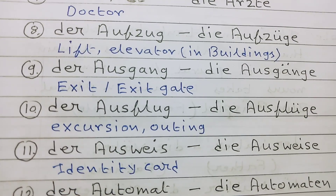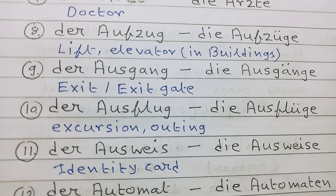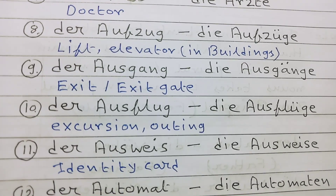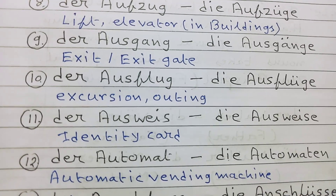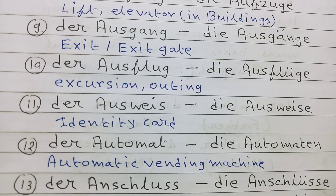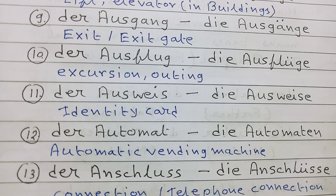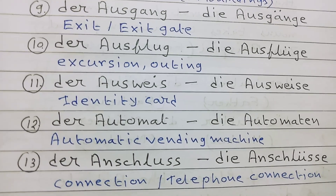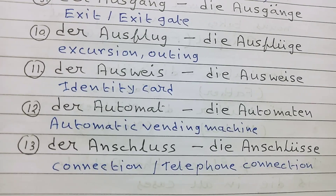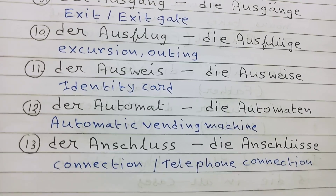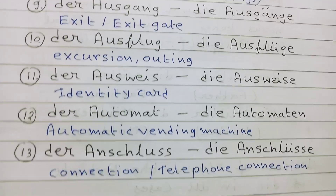Number 11: der Ausweis, die Ausweise — identity card. Number 12: der Automat, die Automaten — automatic vending machine. Number 13: der Anschluss, die Anschlüsse — connection or telephone connection.